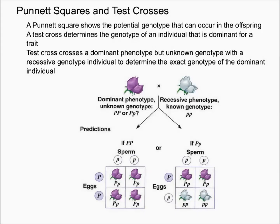In this video, I'm going to talk about Punnett squares as well as test crosses. A Punnett square was actually invented by an early 20th century English geneticist named Reginald Punnett.